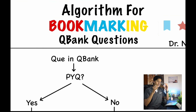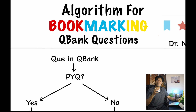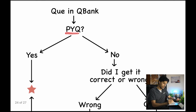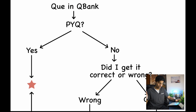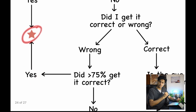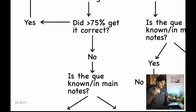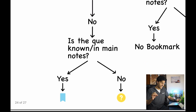Now let me explain the flowchart. When you encounter a QBank question, first ask: is it a PYQ? On Marrow, these will have the hashtag 'recent NEET.' If yes, star mark it. If not a PYQ, ask whether you got it correct or wrong. If wrong, did more than 75% of people get it correct? If yes, star mark it. If no, ask: is the question known or in your main notes? If known, do a standard bookmark. If unknown or unheard, use the question mark bookmark.